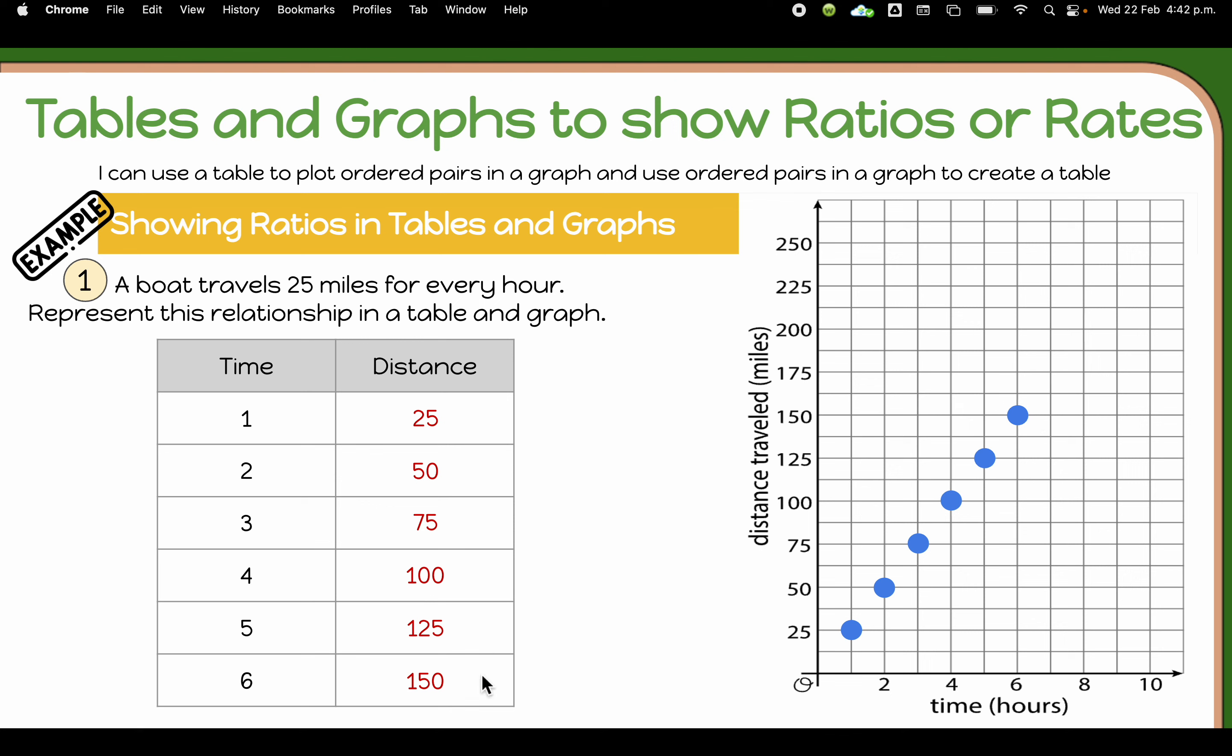Now, these are the points that are in our table, but of course, in our graph, we could continue it. So we can continue the pattern that we're seeing. So then we have the next point, the next point, and so forth.